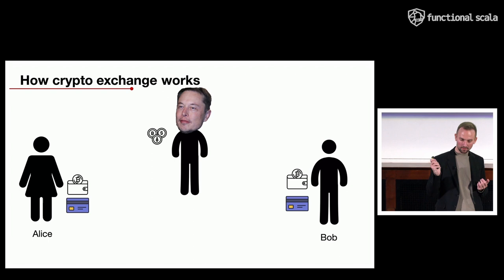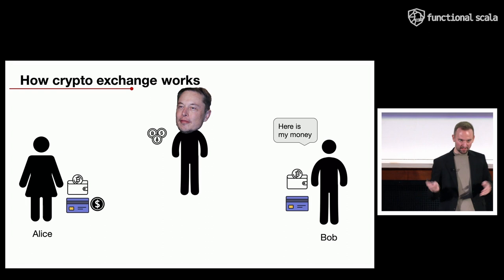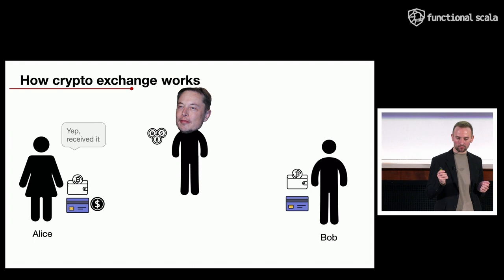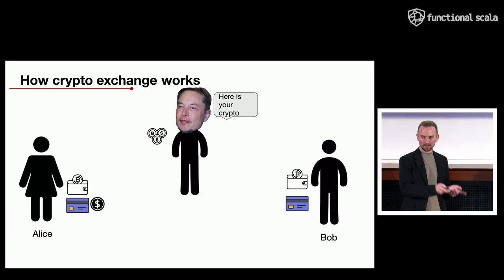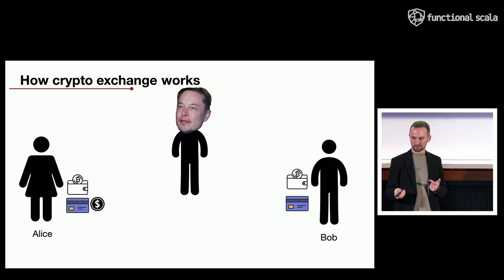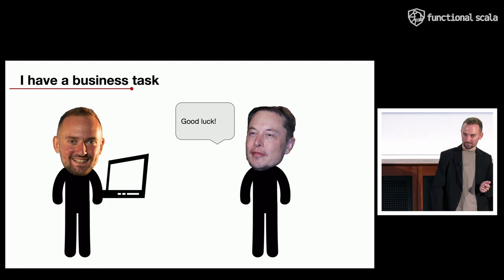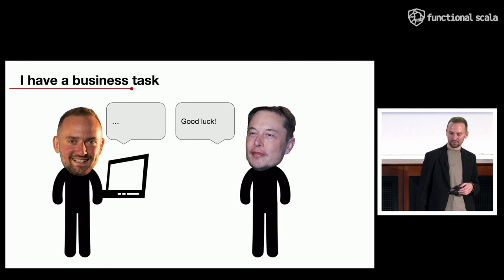Bob notifies Alice via the application that he actually sent the regular money. Alice needs to confirm that, and after confirmation our crypto platform completely transfers the crypto funds to Bob's crypto account. That's it — this is the whole business process.